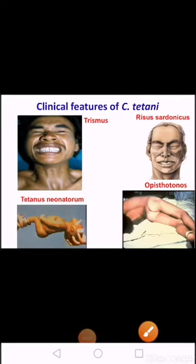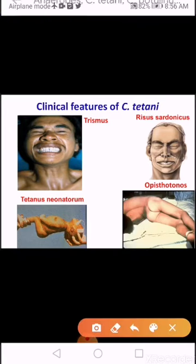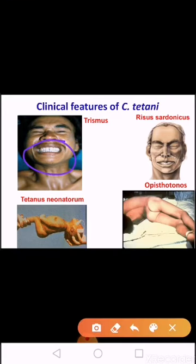Clostridium tetani produces tetanus, characterized by strong muscle spasm — spastic paralysis. Specific clinical features include lock jaw, caused by rigid contraction of jaw muscles preventing the mouth from opening, and a characteristic grimace known as risus sardonicus. Opisthotonus is a condition of pronounced arching of the back due to spasm of the strong extensor muscles. Respiratory failure can also occur. In tetanus neonatorum there is complete rigidity in the baby.